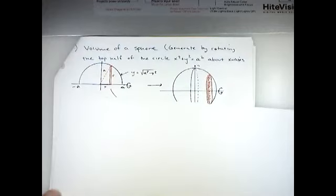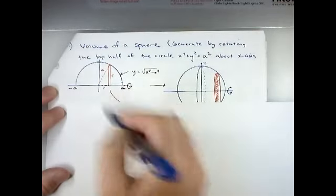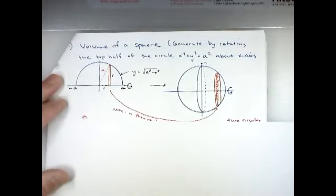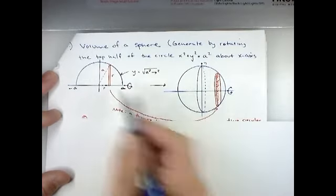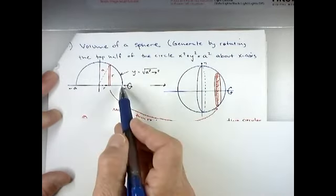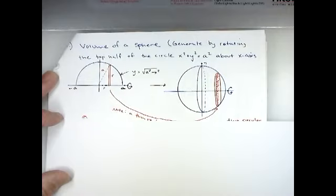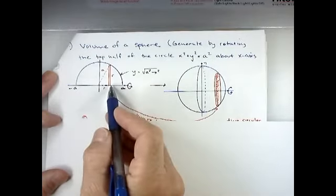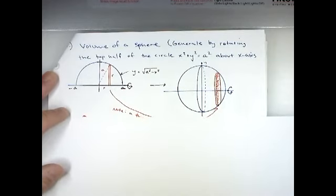If you take a half of a circle and rotate it around the x-axis, it sweeps out a familiar three-dimensional shape: a sphere. What we're really going to do here is derive the volume formula for a sphere. It's not an easy formula — in fact, the only way to find it is to use an integral. So if you've ever been curious about where the volume formula for a sphere comes from, this is going to answer that.